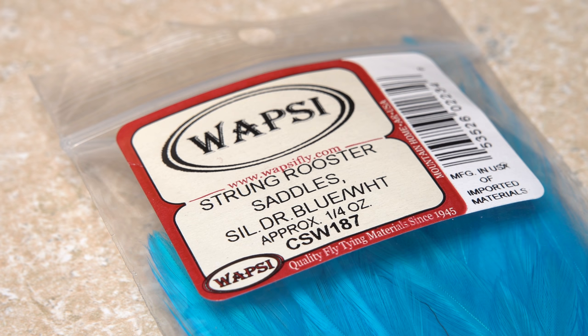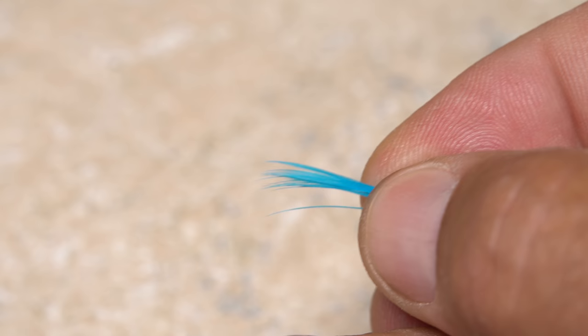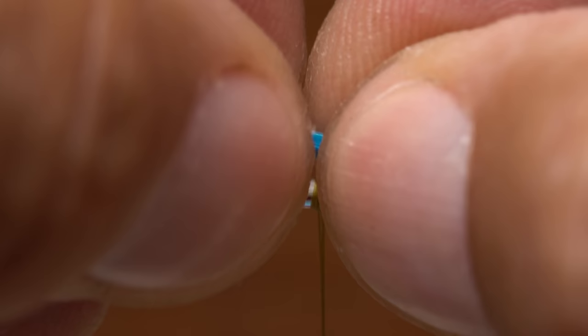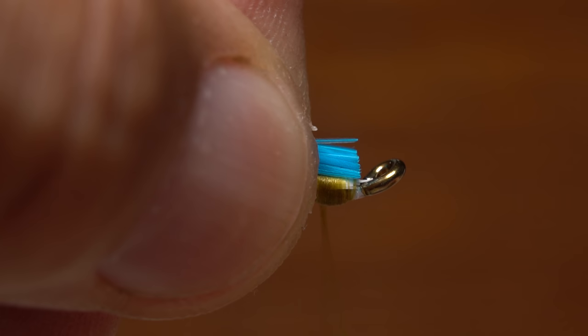Silver doctor blue saddle hackle fibers are used for the fly's throat. Preen a dozen or so fibers down perpendicular to the stem and pull the stem away to strip them free. With the fiber tips pointing to the rear of the fly, lay them on top of the white bucktail so the tips extend halfway down the bucktail. Here again, use the back edge of the hook eye as a guide for your scissors and snip the butt ends off square. Spin your bobbin counterclockwise, then anchor the fibers with nice tight thread wraps.